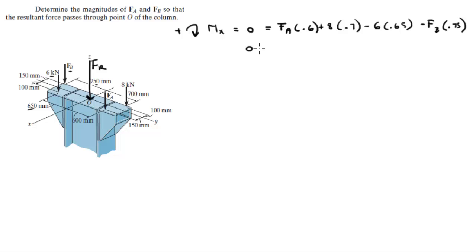When you clean this up, you get zero equals 0.6FA minus 0.75FB plus 1.7. So 1.7 equals negative 0.6FA plus 0.75FB, and I'm going to call this equation 1.